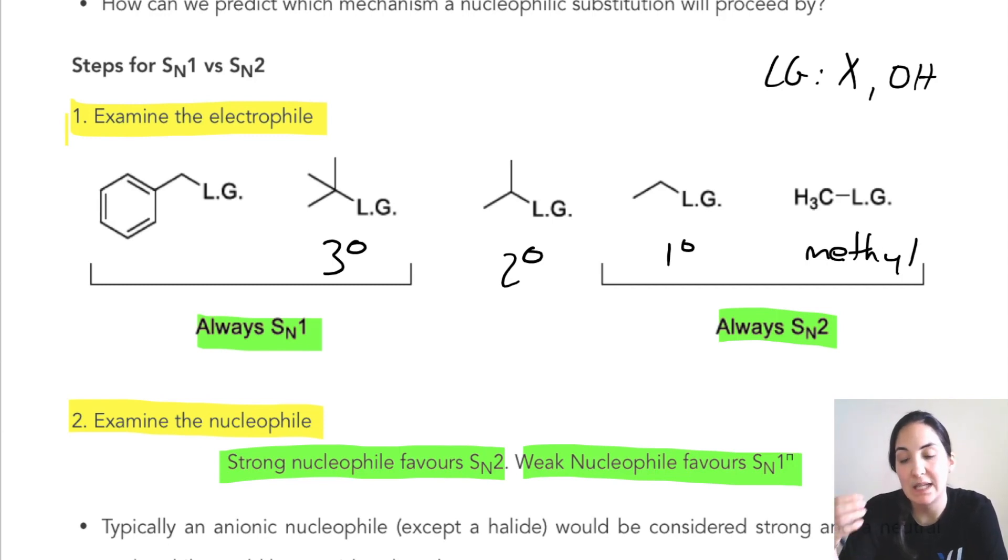The mechanism in SN1 goes through a carbocation intermediate and that's the rate determining step. Because that's the rate determining step, only the substrate is involved in that. So the strength of the nucleophile is not important; therefore, even if we have a weak nucleophile, we can still have SN1. If we have a strong nucleophile, the reaction is more likely to go to SN2.